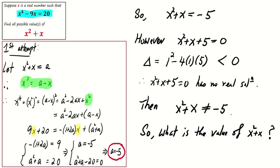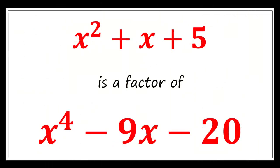Let's revisit the insight we obtained. Although we haven't arrived at the final answer yet, we have uncovered some valuable information. x^2 + x = -5. Do you know what this implies? It means that x^2 + x + 5 is a factor of x^4 - 9x - 20.